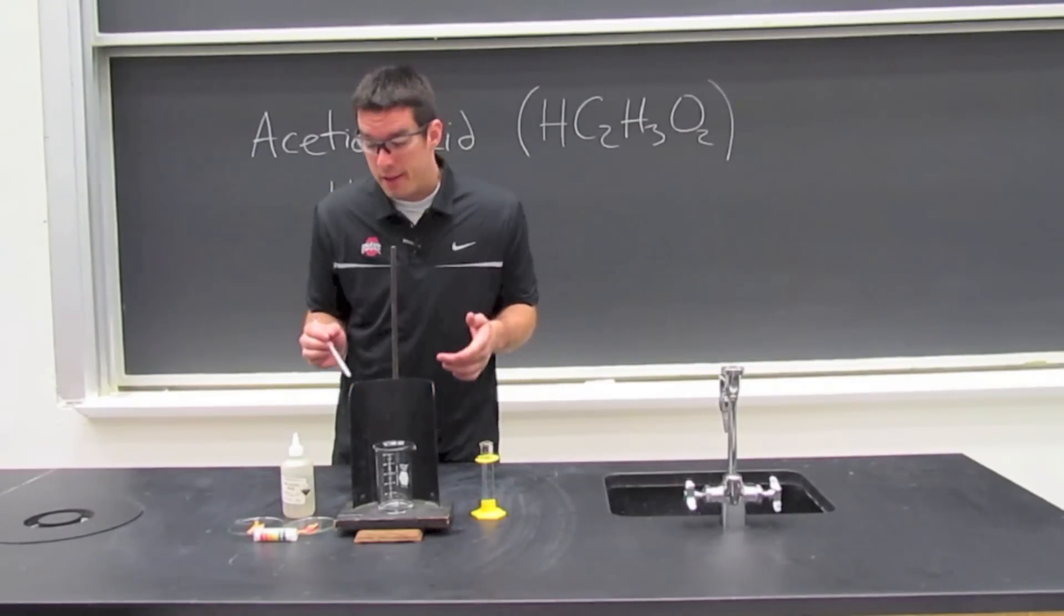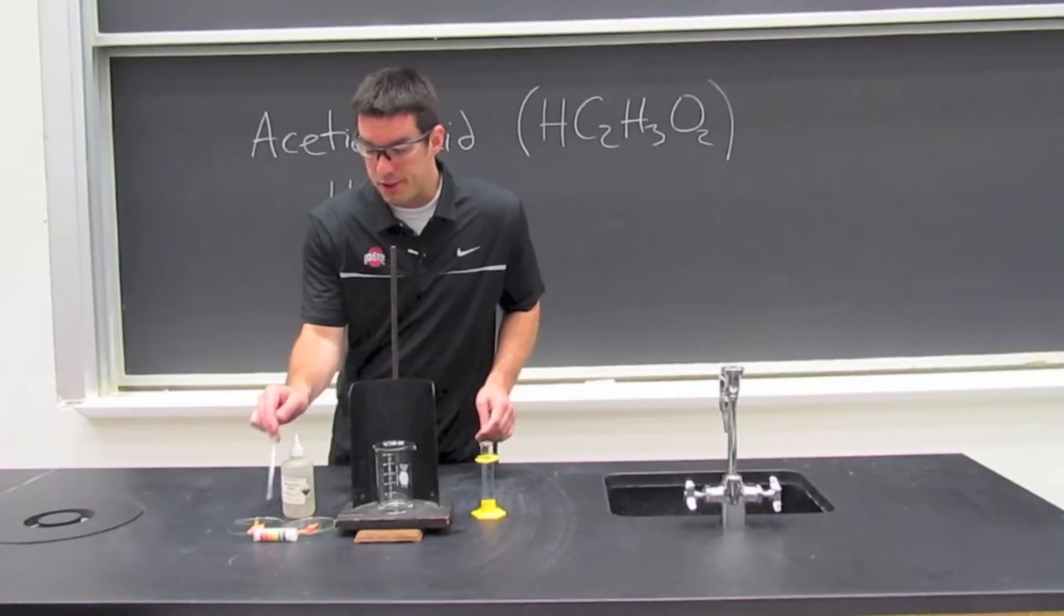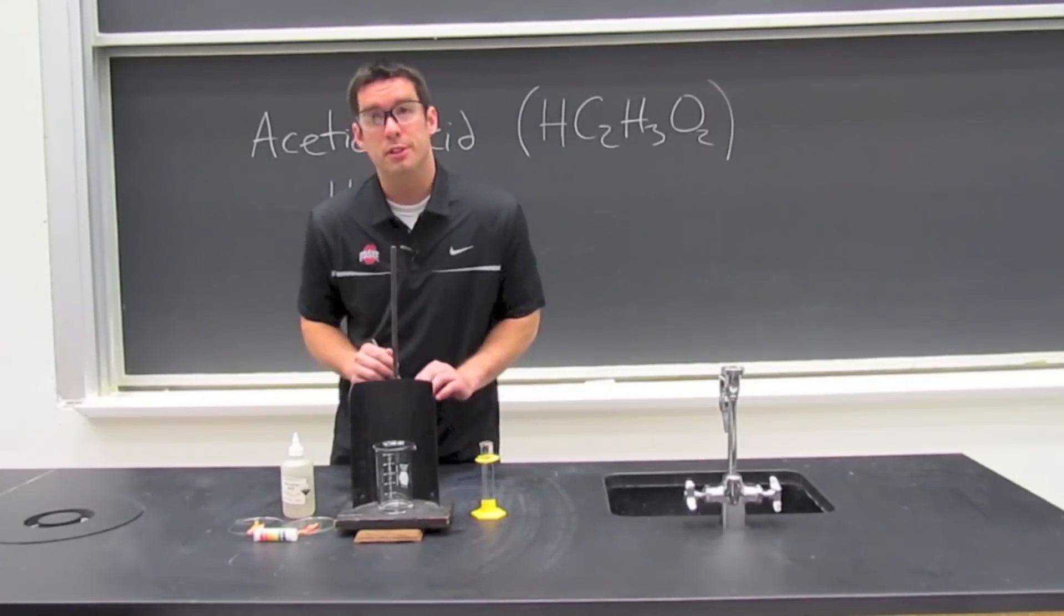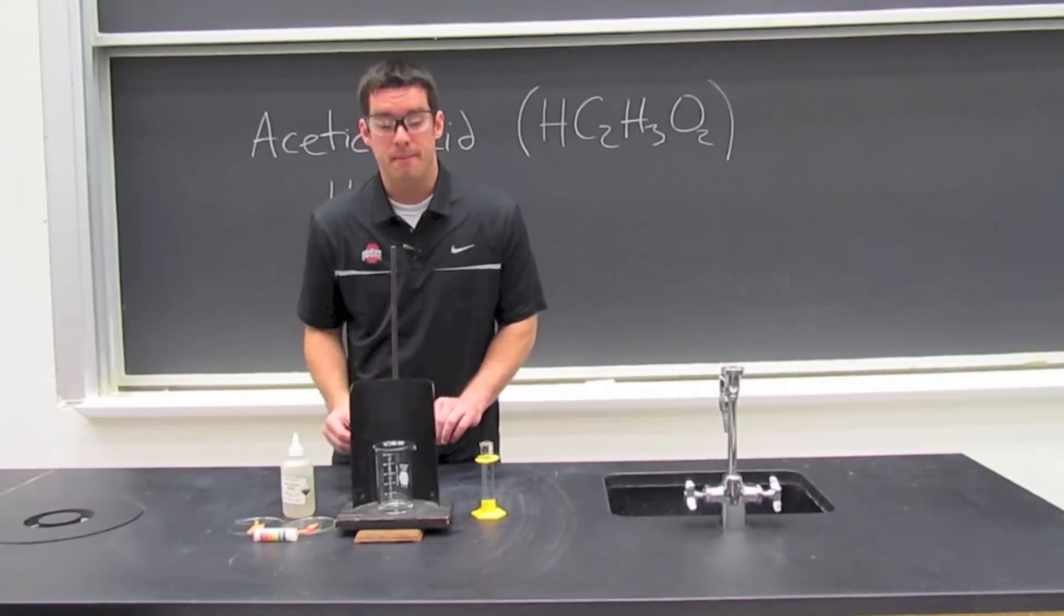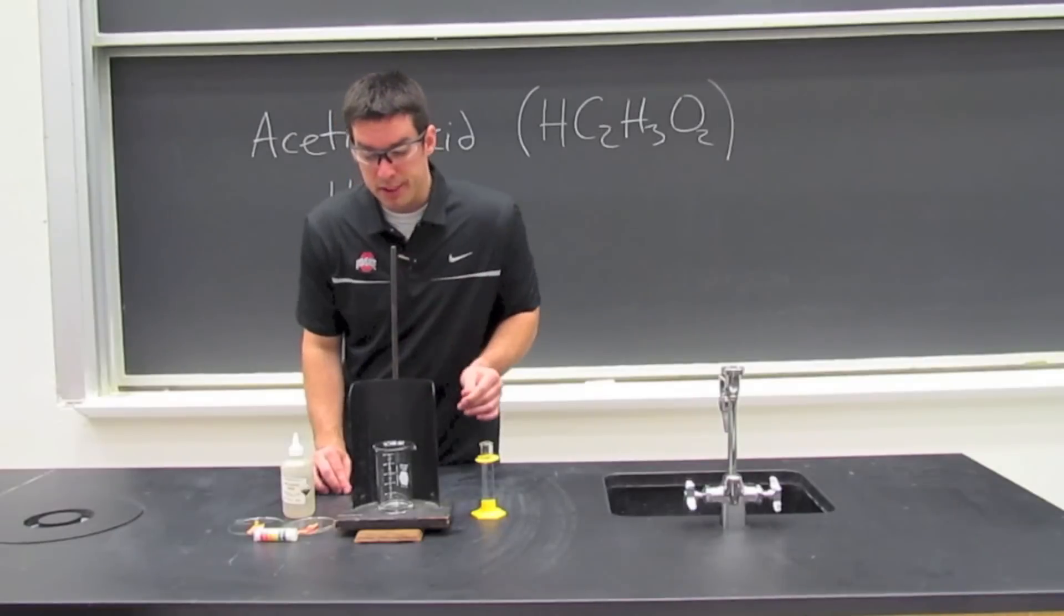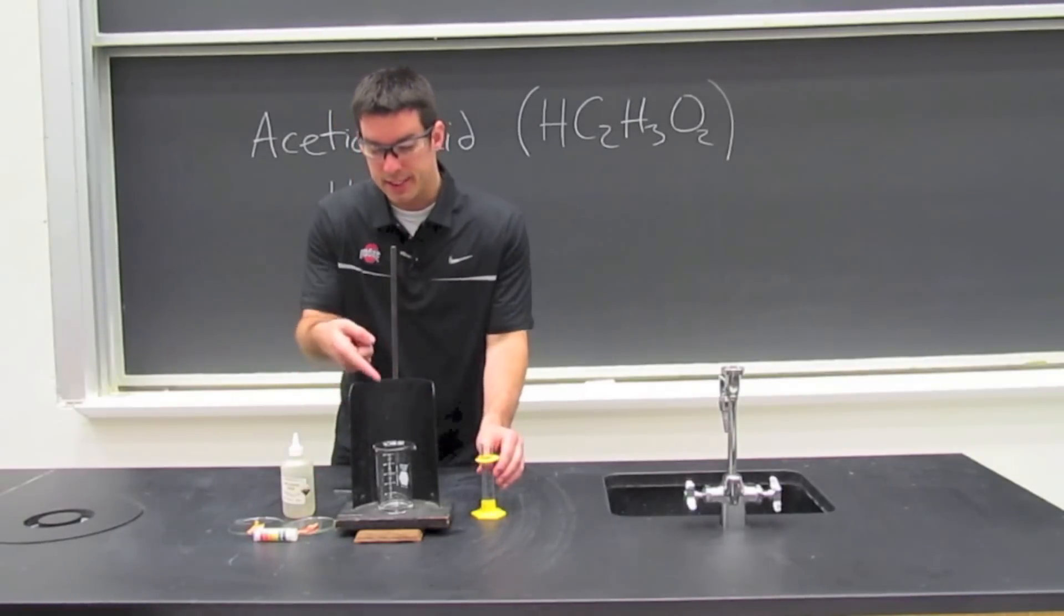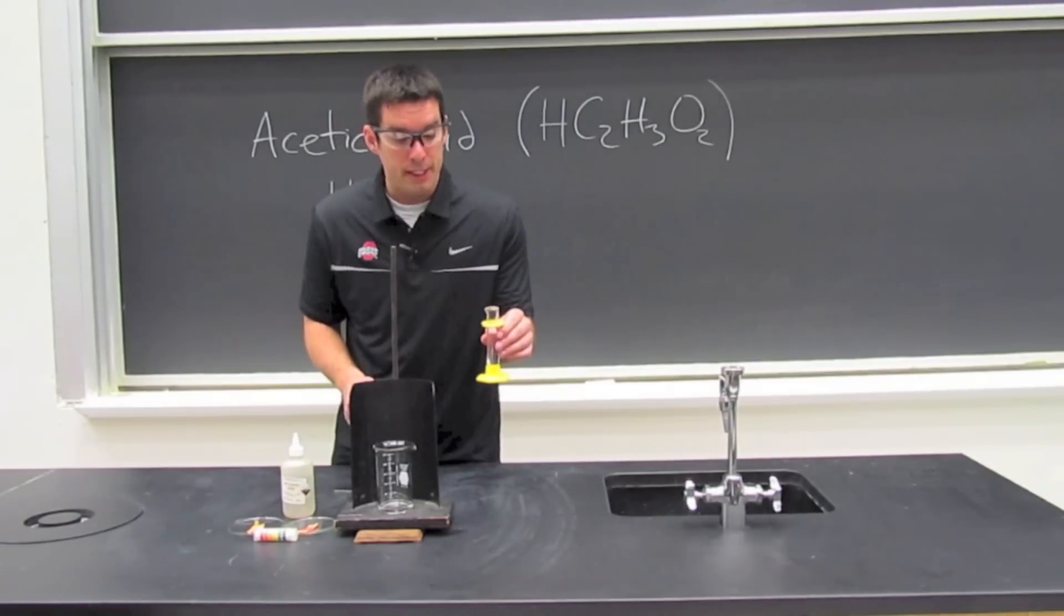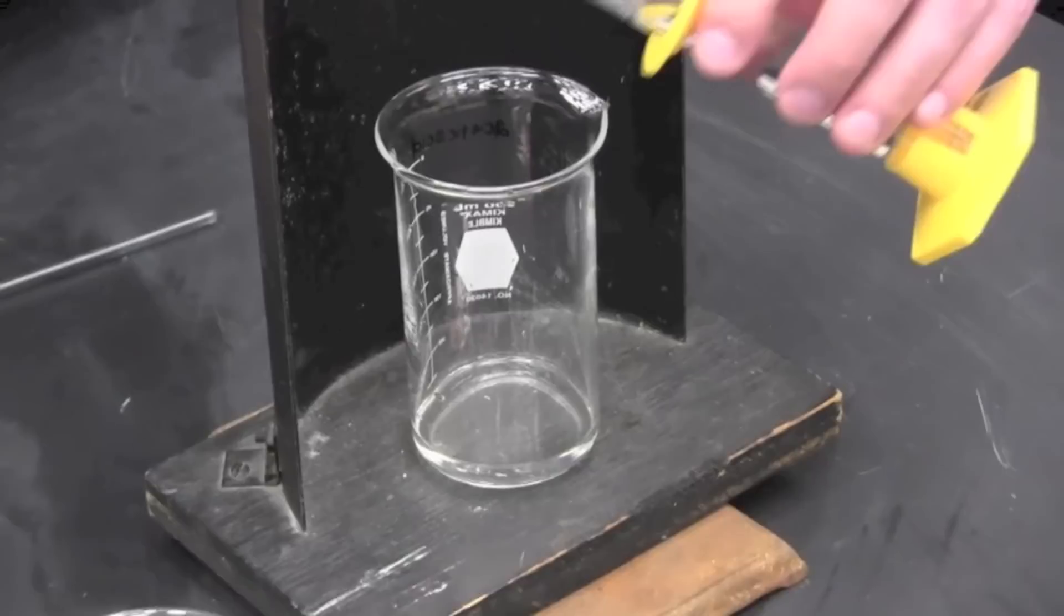So we just saw that the pH is going to be around 1 when we have a 6 molar solution of acetic acid. So we have 20 milliliters of 6 molar acetic acid in this beaker, and to the beaker we're going to add 20 milliliters of water.